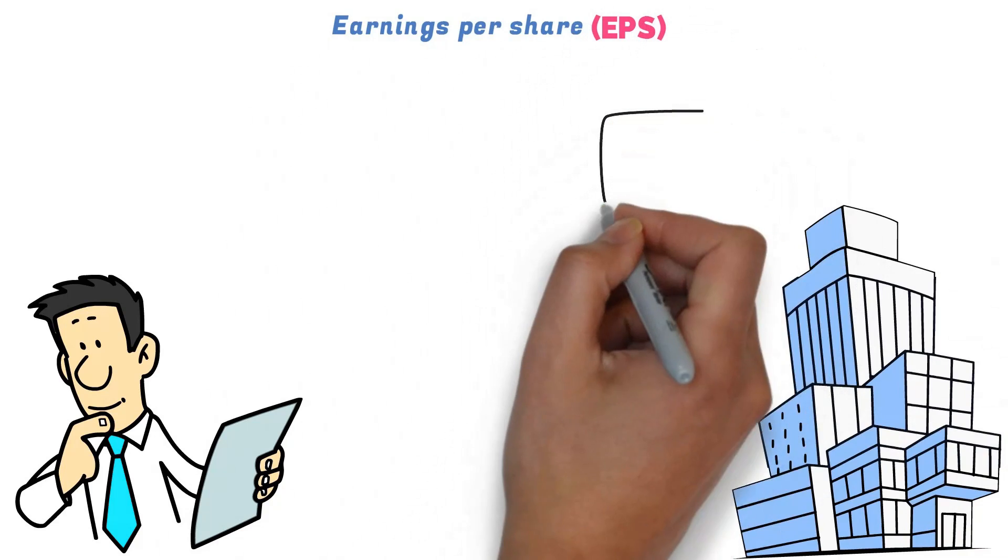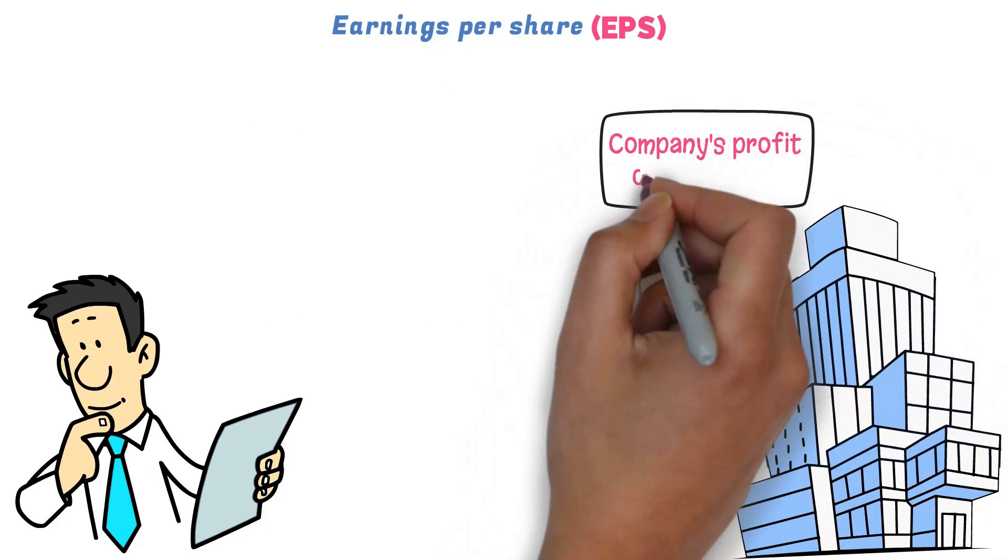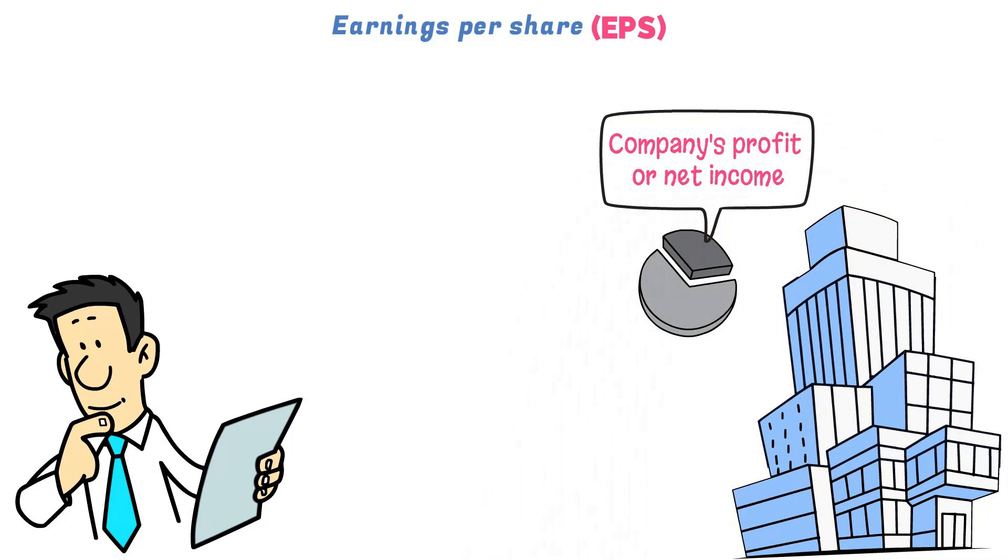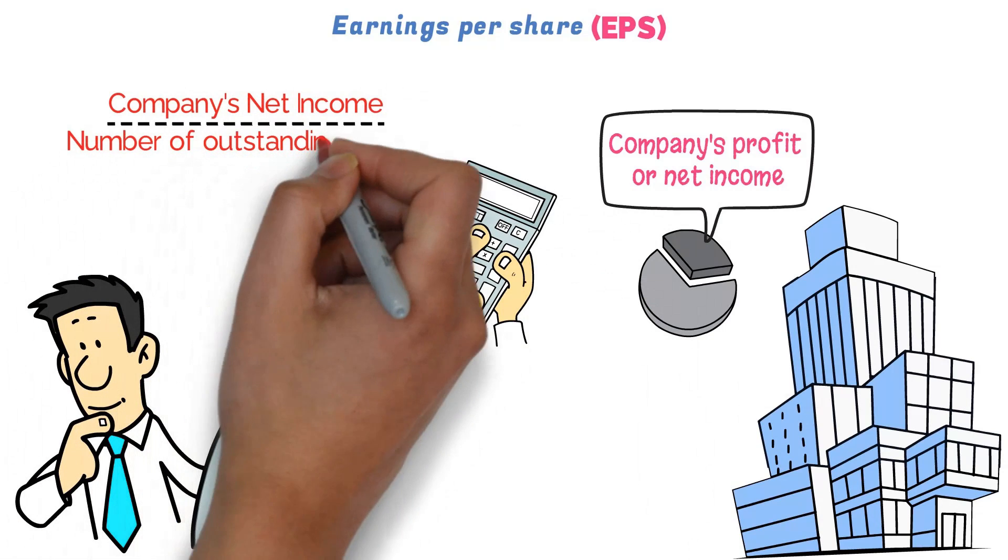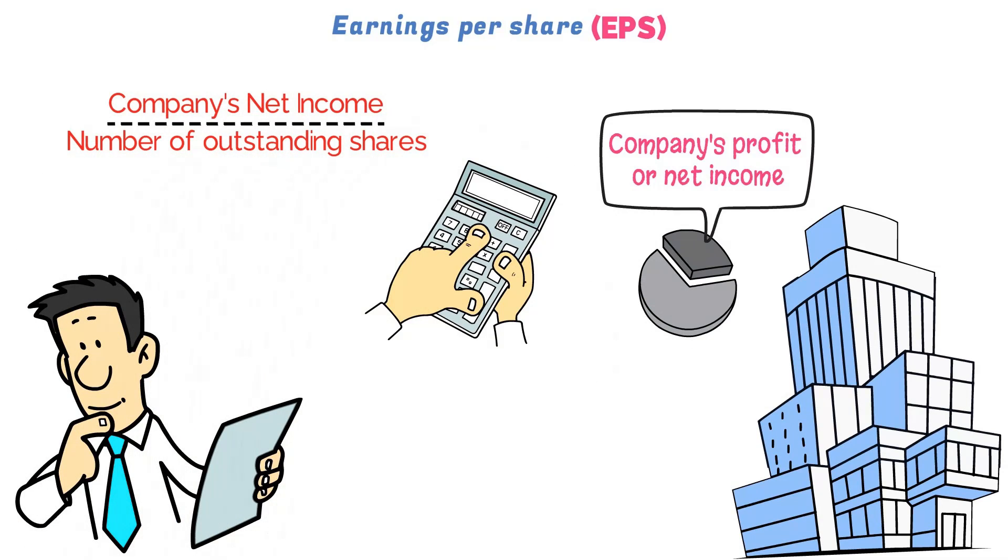This is a metric that represents the portion of a company's profit, or net income, that's allocated to each outstanding share of its common stock. This is calculated by dividing a company's net income by the number of outstanding shares. EPS is a widely used metric because it's an indicator of a company's profitability on a per-share basis.